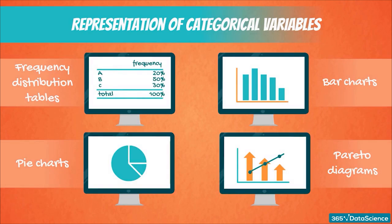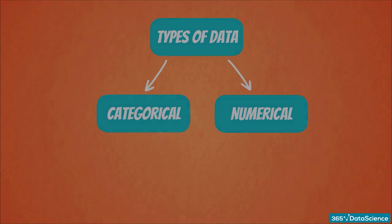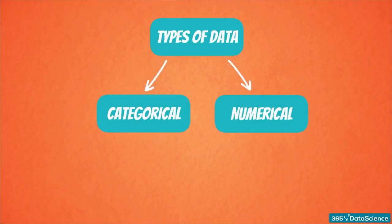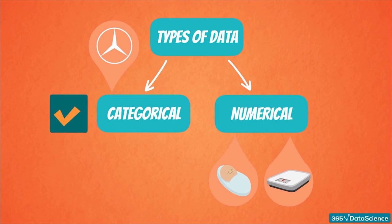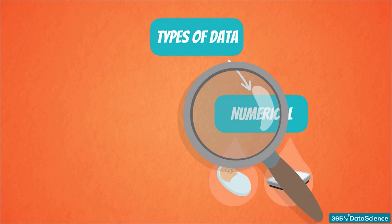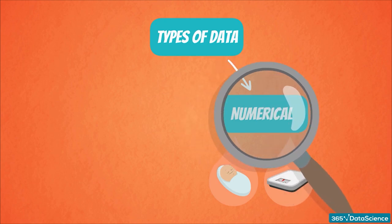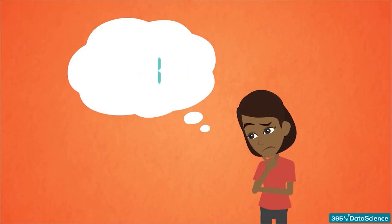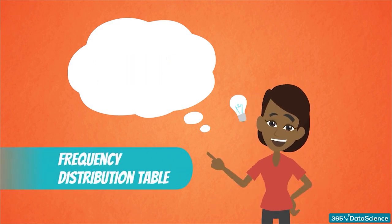These are the main ways in which we can visually represent categorical data. We already know how to create graphs and tables for categorical variables. In this lesson, we are going to do the same for numerical variables. Whenever we want to plot data, it is best to first order it in a table. So, as we did with categorical variables, let's start by creating a frequency distribution table.